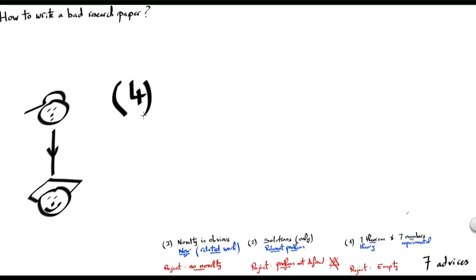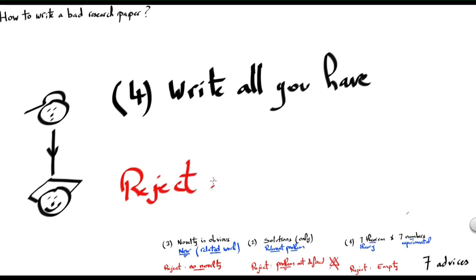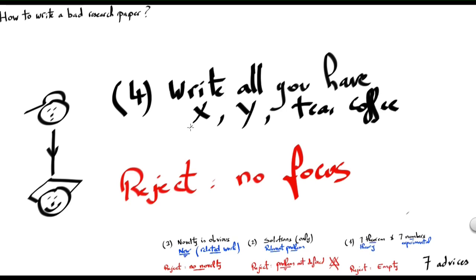The reviewer can still reject the paper if you write all you have. In this case, the paper is rejected with the argument there is no focus. What I mean is we solve problem X, then problem Y, then we also prepare tea and do coffee, etc. It is very important that one problem is highlighted and clearly discussed.